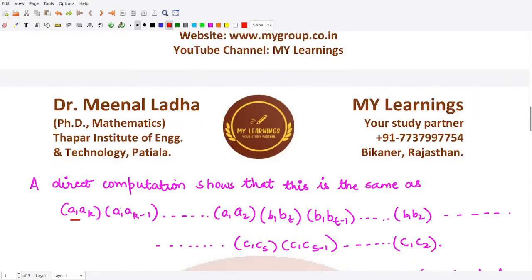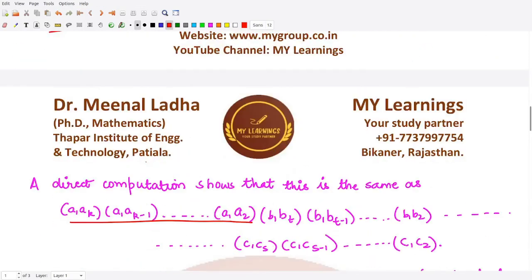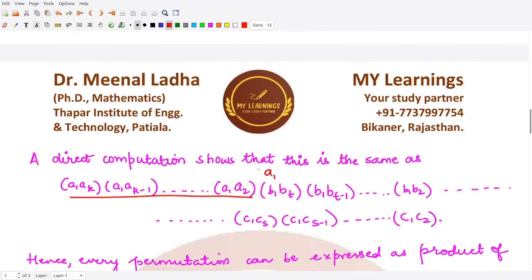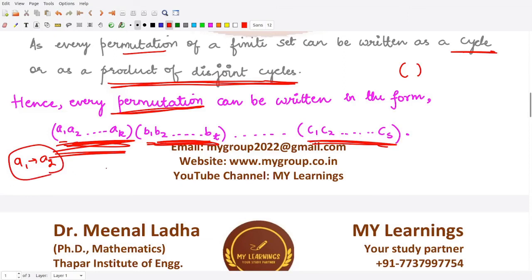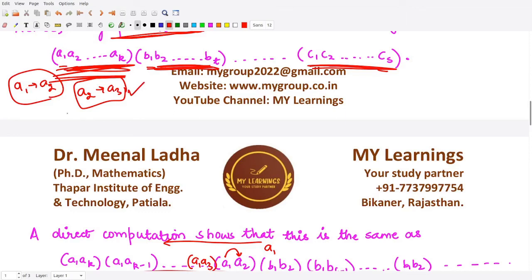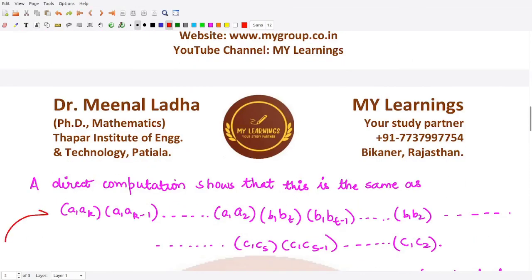To verify this, consider element a1: in the cycle it maps to a2. In the product of transpositions, a1 maps to a2 via the last transposition (a1 a2), and a2 is not moved further, so a1 maps to a2. For a2: a2 maps to a1 in (a1 a2), then a1 maps to a3 in (a1 a3), so a2 maps to a3. This pattern holds for all other entries in the cycle.